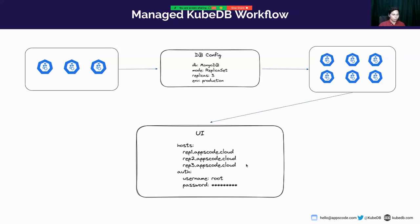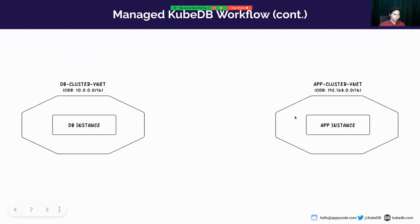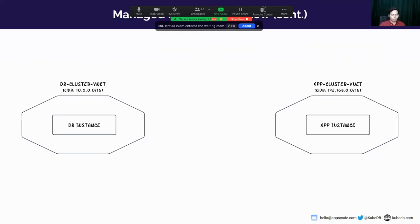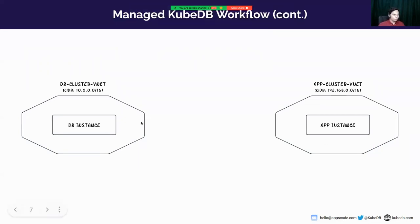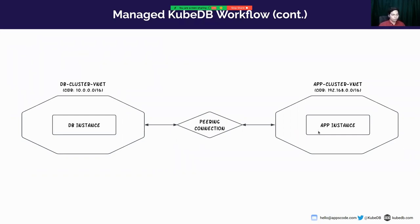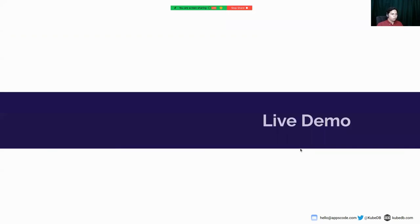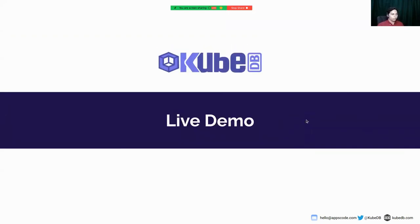Now let's go a bit deeper into the workflow. We can see two clusters: a database cluster and an application cluster. The database cluster runs under the DB cluster VNet and the application cluster runs under the app cluster VNet — both running with different CIDR ranges. We are going to create a peering connection between the two VNets so that it becomes possible to access the database from your application. You need to make sure the VNets are running with different CIDR ranges. All of this can be done by creating the clusters from our Byte Builders console.